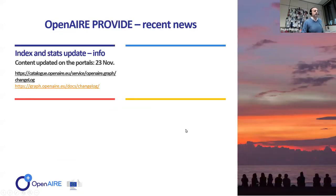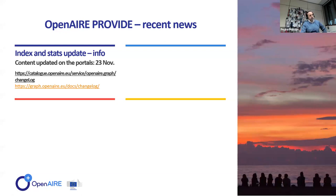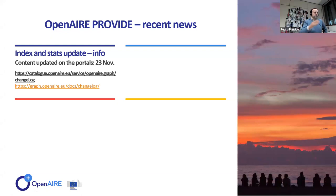Just two minutes to highlight some recent news. We usually share what is in production in terms of our graph. The index and stats update is from the 23rd of November. It's important to highlight that we aim to do this update every month, but the previous update was around the 20th of September — there was no update in October. So this is effectively a two-month update, which is relevant for you to be aware of. In the coming days, those with broker event notifications will receive those notifications.